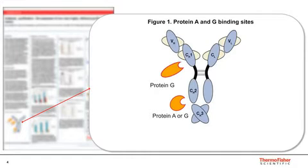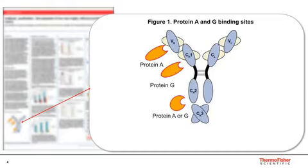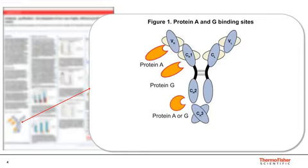Now, for labs that are doing purification on a wide range of antibodies, there's Protein AG. Protein AG is a chimeric protein that combines the five antibody binding sites of Protein A and two antibody binding sites of Protein G for an all-in-one resin. The resins we'll talk about have either Protein G or Protein AG immobilized to the POROS base bead.